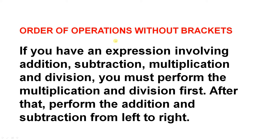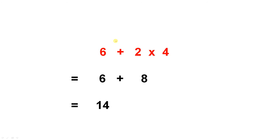If you have an expression involving addition, subtraction, multiplication and division, you must perform the multiplication and division first. After that, perform the addition and subtraction from left to right. Here's a simple example. If you have 6 and you are adding that to the product of 2 and 4, you must perform this part first. 2 times 4 gives you 8. There's your addition sign, and there's your 6. 6 plus 8 gives you 14.